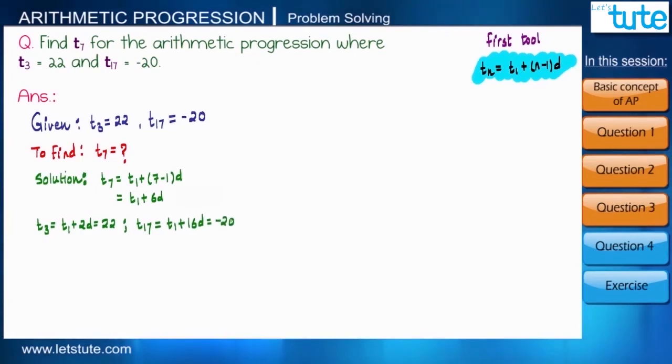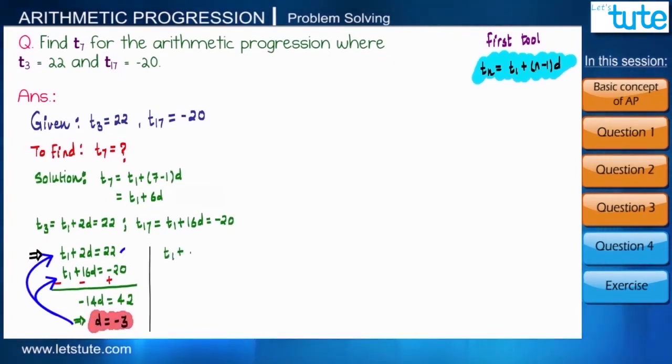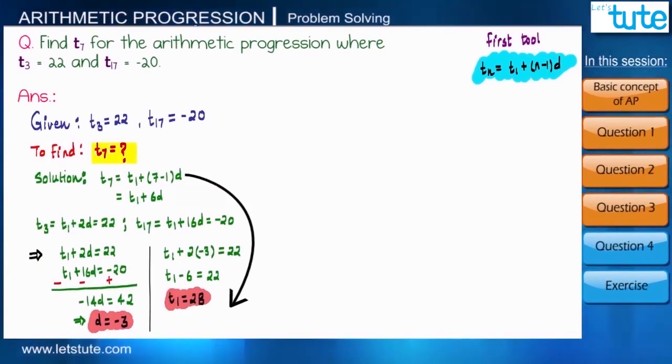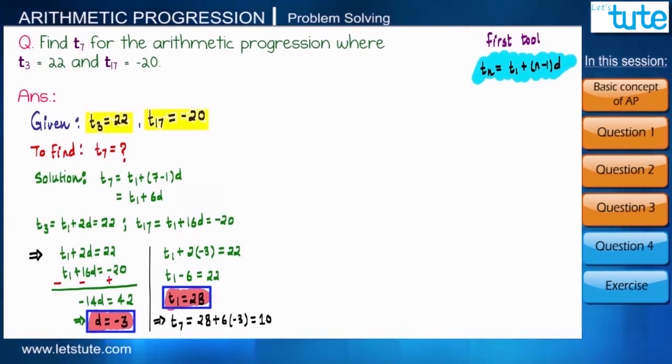So what will we do? We will write t3 and t17 in the form of t1 and d only. So we will get two equations in two variables, and we all know how to solve these simultaneous equations. So after solving it, we will get value of d equals minus 3, and if we put d in any of the equations, we will get value of t1 that is equal to 28. That means we have got our two main pillars: t1 and d. Now by substituting the value of t1 and d, we will get t7 equals 10. So friends, what do we learn by the solution of this question? We learn that if any two terms of an arithmetic progression are given, then not only we can find first term t1 and the common difference d, but also we can find any term of that particular arithmetic progression.